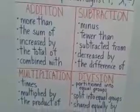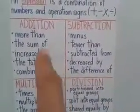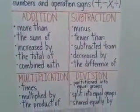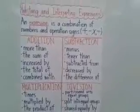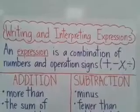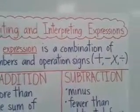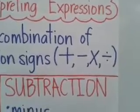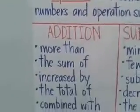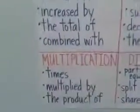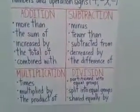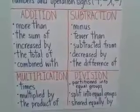Make sure you wrote all this down in your notebook nice and neat. You can make a four-square, or make a list going down. Let's review: what is an expression? An expression is a combination of numbers and operation signs. The four operations are addition, subtraction, multiplication, and division.